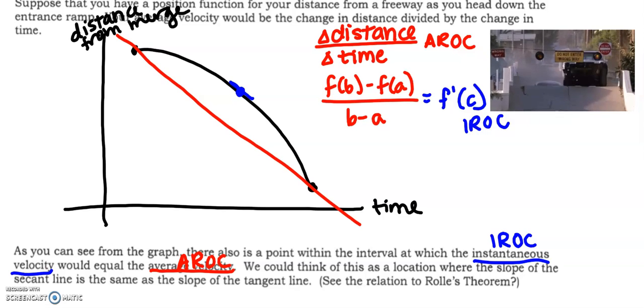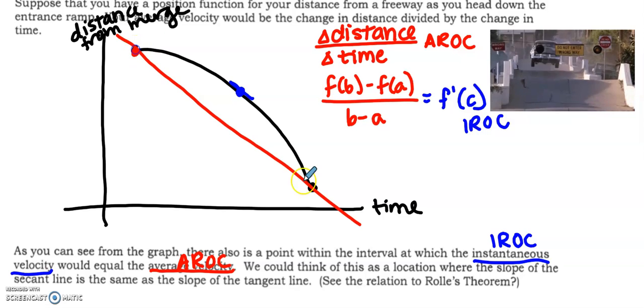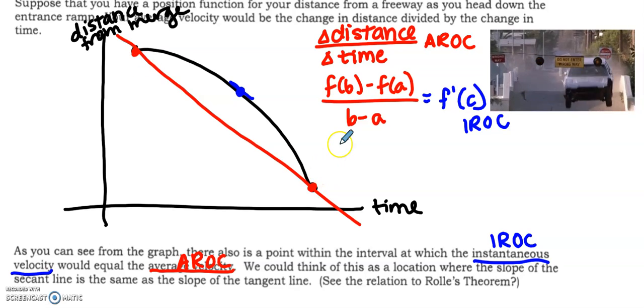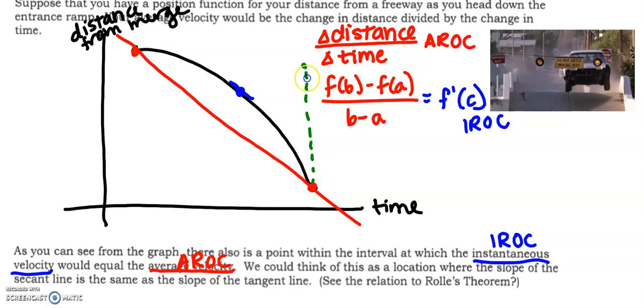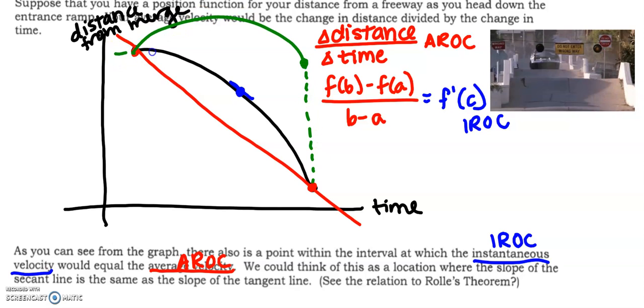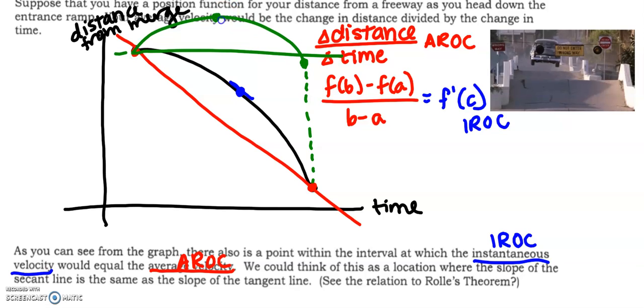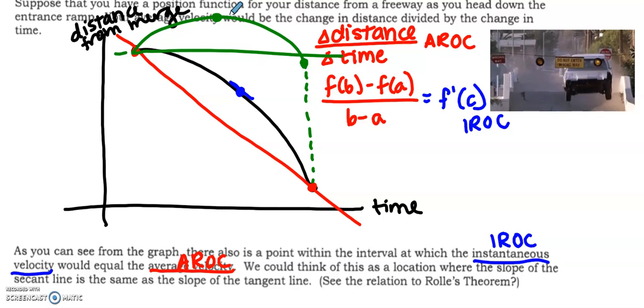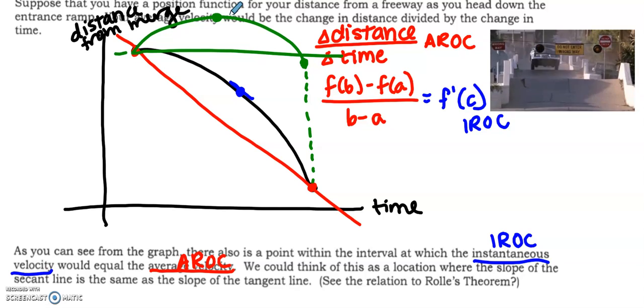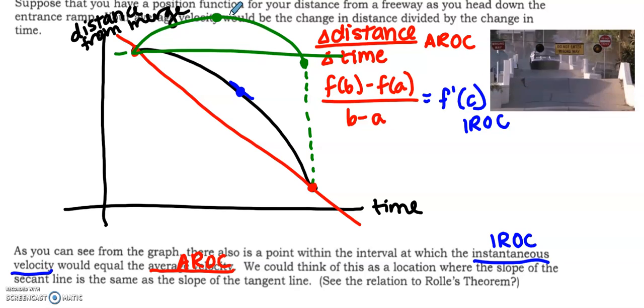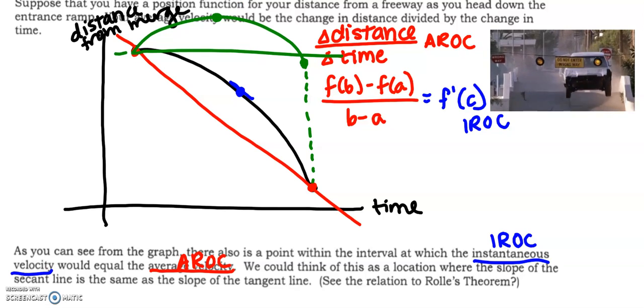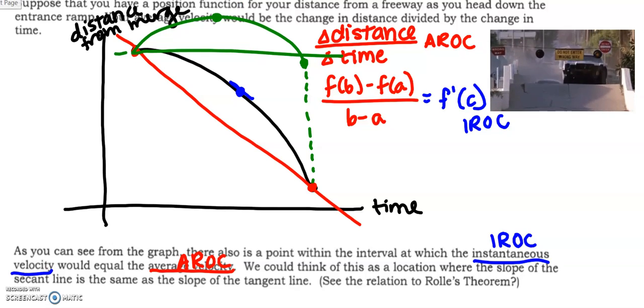Thinking about Rolle's, if I took this graph, here's my f(b), here's my f(a), and I turned it. So let's say I moved this red dot up to here and I redrew my graph like this, do we see our connection to Rolle's, right? The mean value theorem is basically Rolle's on its side. The mean value theorem is a more general version of Rolle's. What I mean by that is you could think about the mean value theorem is like a rectangle and Rolle's theorem is like a square. Okay, Rolle's theorem is very specific. Mean value theorem applies more generally.